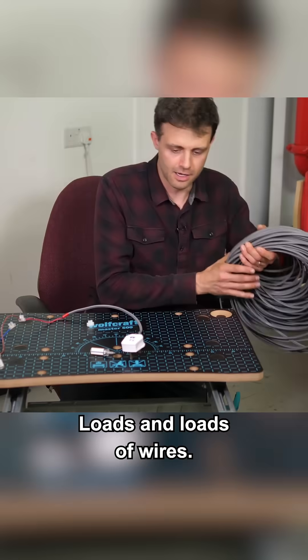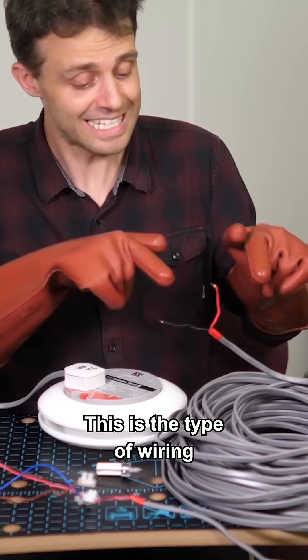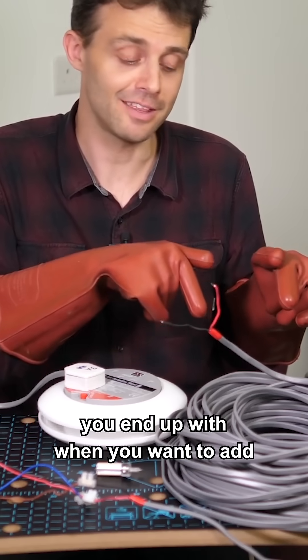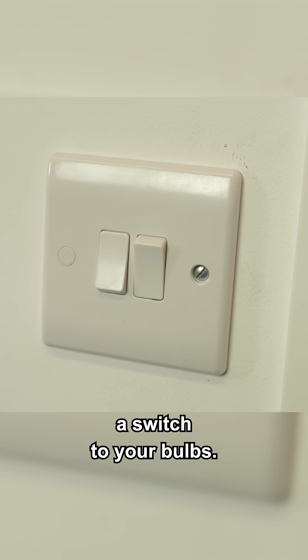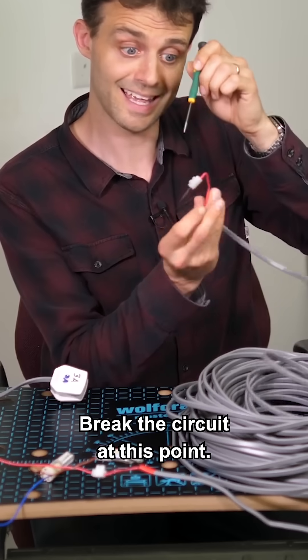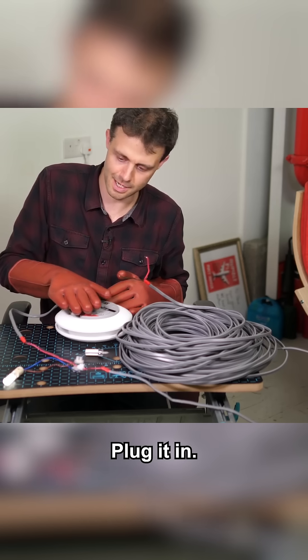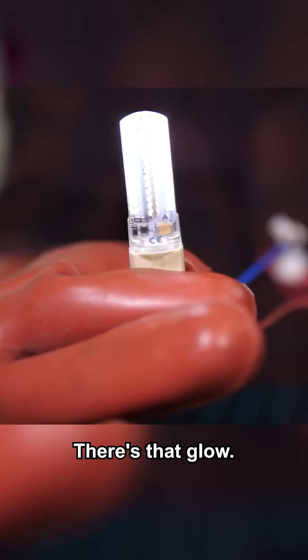Loads and loads of wires. This is the type of wiring you end up with when you want to add a switch to your bulbs. Break the circuit at this point. Plug it in and there it is, there's that glow.